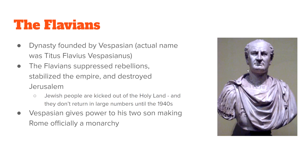Vespasian founded another dynasty known as the Flavians — his real name was Titus Flavius Vespasianus. The Flavians suppressed revolts, destroyed the temple in Jerusalem, and the Jewish people were kicked out of the Holy Land under Vespasian, not returning until 1946. Vespasian gave power to his two sons and officially made the Roman Empire a monarchy.